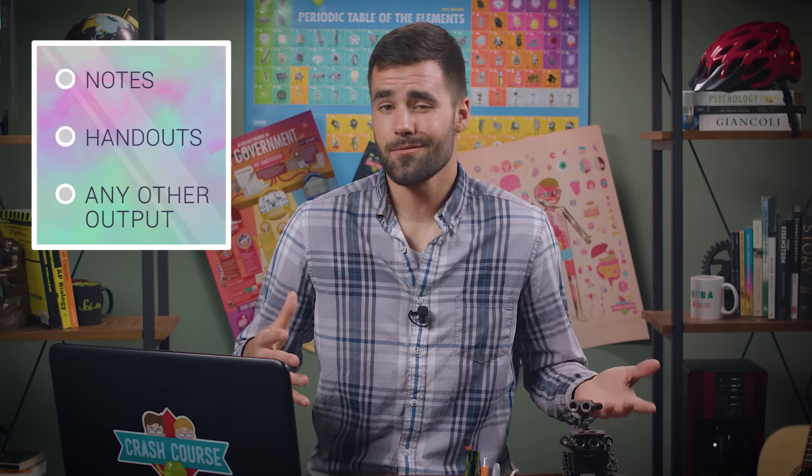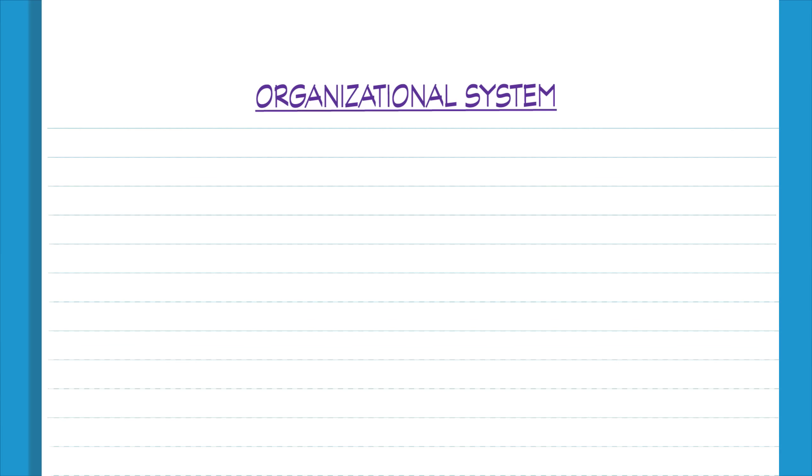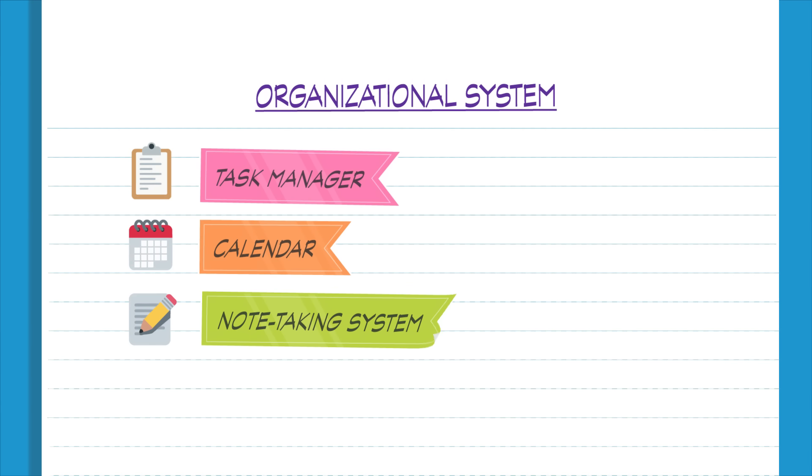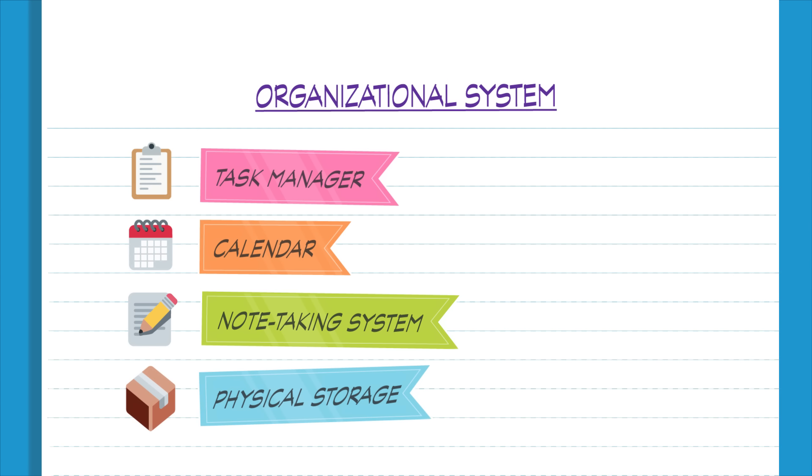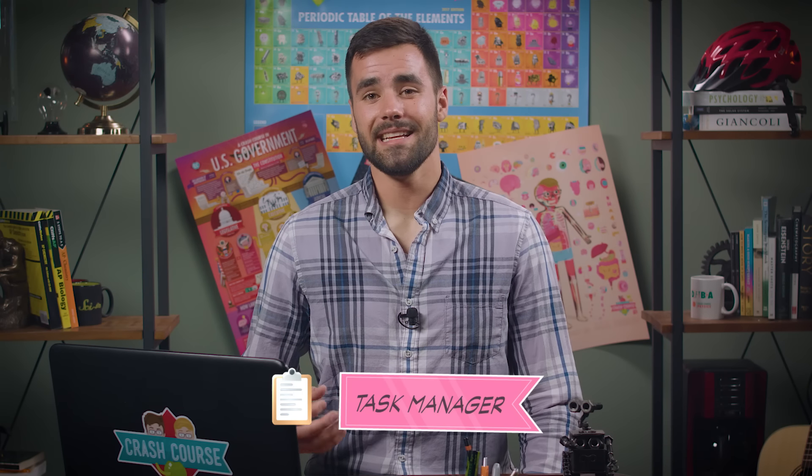Additionally, you'll need a reliable way to store notes, handouts, and any other output you create, be it writing, code, art, or origami. Any good organizational system worth its salt includes a task manager, a calendar, a note-taking system, and some kind of physical storage for paper documents. Your task manager is the place where you record the stuff that you need to get done.